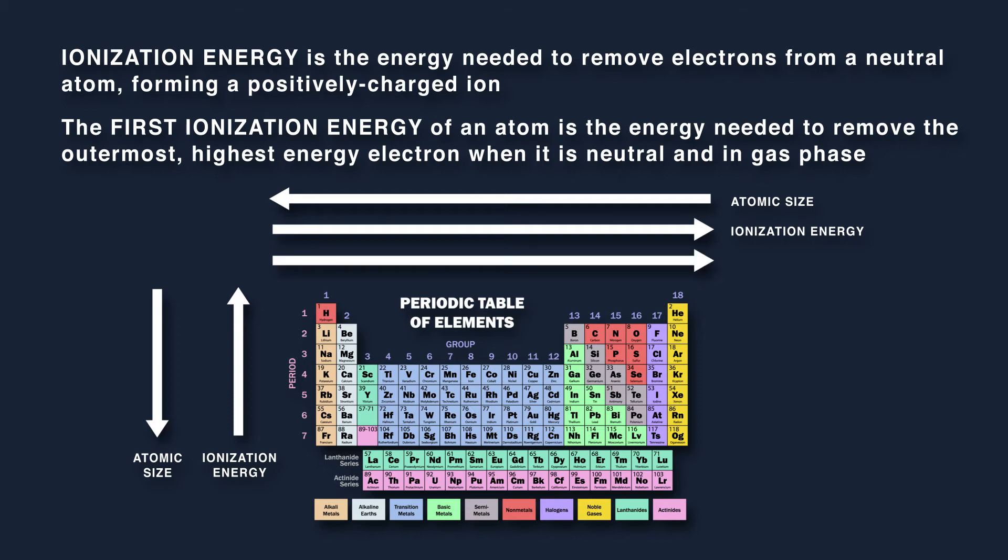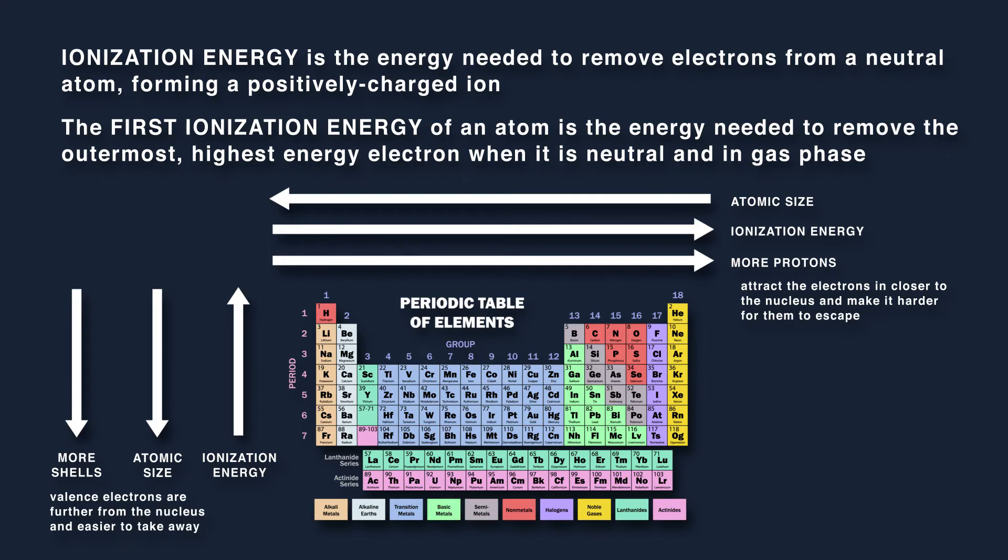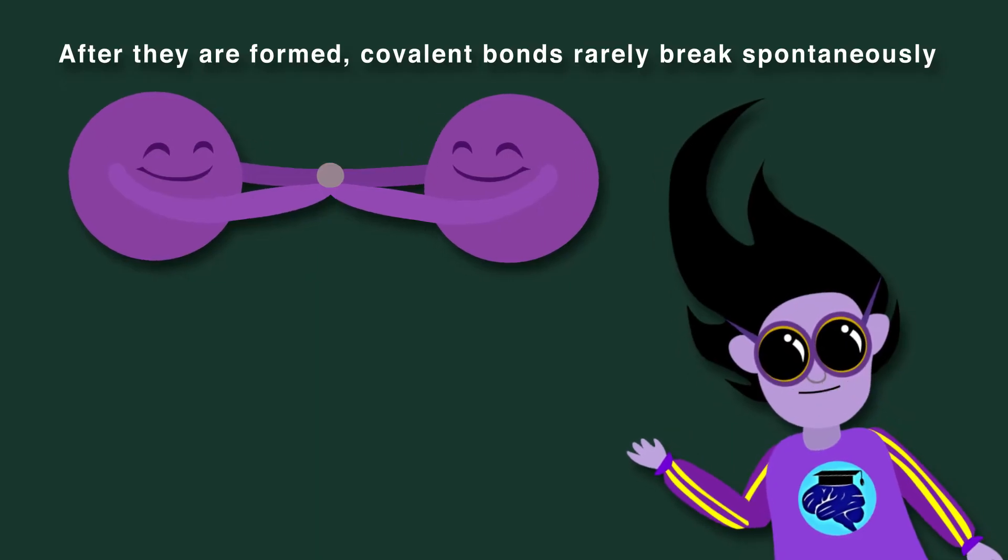As you travel right on the periodic table, you have more protons, which attract the electrons in closer to the nucleus and make it harder for them to escape. As you go down, with each row you get a new shell of electrons, and so the valence electrons are further from the nucleus and easier to take away.